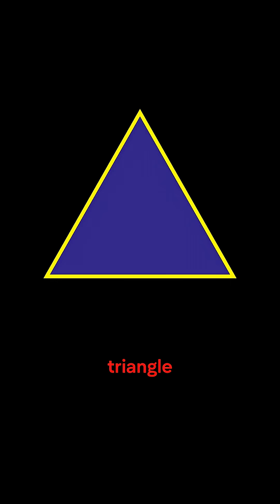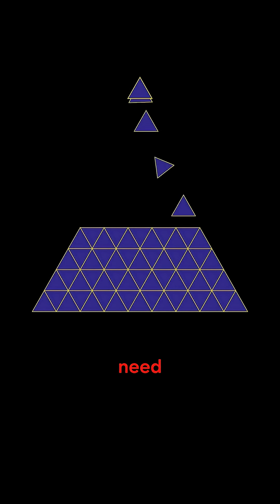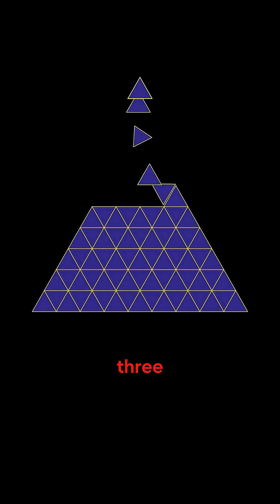In geometry, the equilateral triangle is essentially the first object that we get that actually has vertices and encloses space. You need a minimum of three sides to enclose the space.